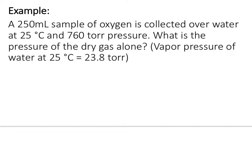Here's an example. A 250 mL sample of oxygen is collected over water at 25 degrees Celsius and 760 torr pressure. What is the pressure of the dry gas alone? Our vapor pressure of water at 25 degrees Celsius is 23.8 torr. So what this is saying is that we collected it over water, and our total pressure came to 760 torr. Spend a few minutes trying to find the pressure of just the oxygen without the vapor pressure.